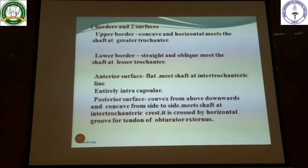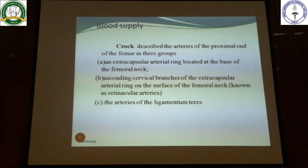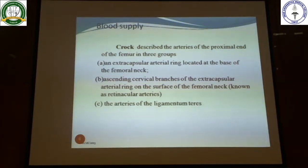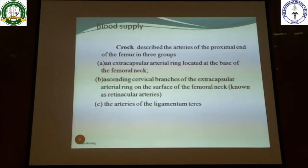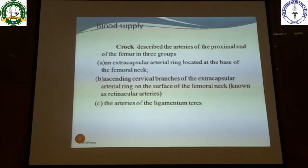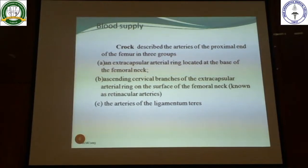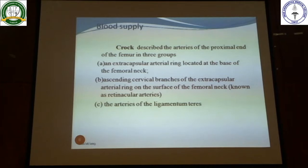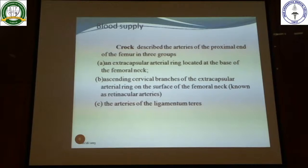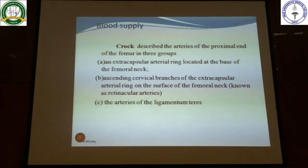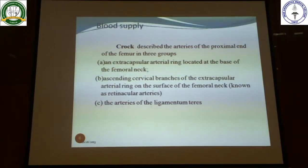Blood supply of the neck of femur is a very important topic — it may be asked as a separate short note. Crock described the arterial supply of the proximal femur in three groups: first, the extracapsular arterial ring at the base of the femoral neck; second, the ascending cervical branches on the surface of the femoral neck, also known as retinacular arteries; and third, the arteries of the ligamentum teres.